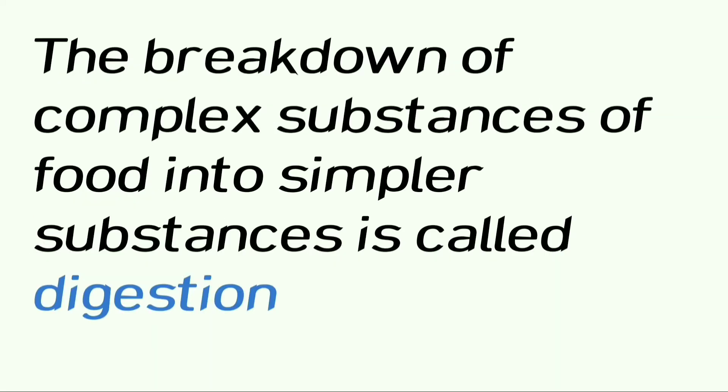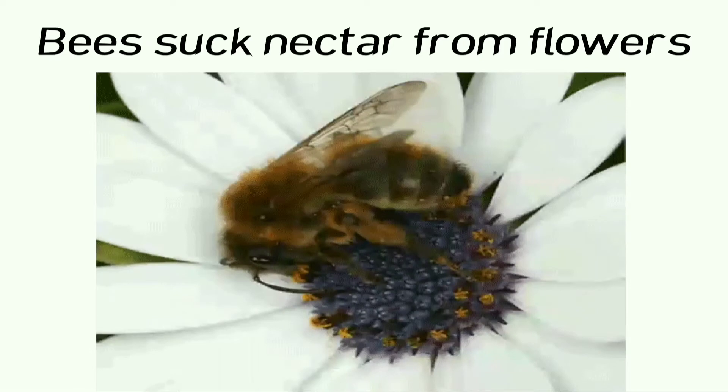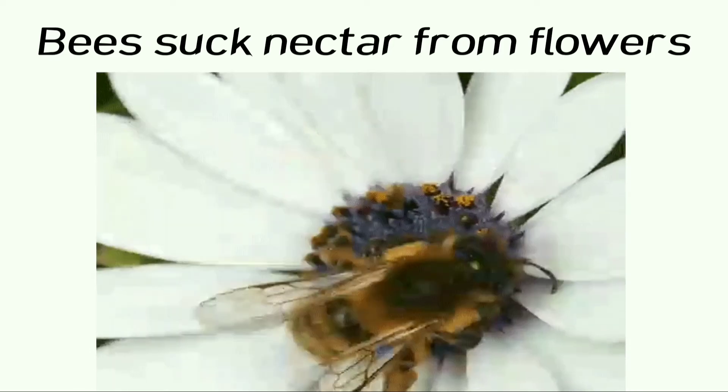These complex substances have to be broken down into simpler substances. The breakdown of complex substances of food into simpler substances is called digestion. Different animals take food in different ways — the mode of taking food into the body varies in different organisms.